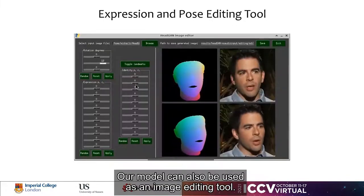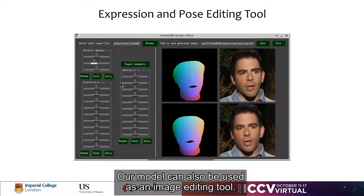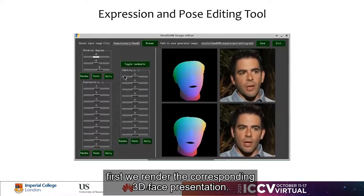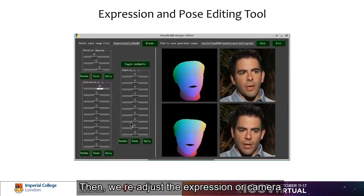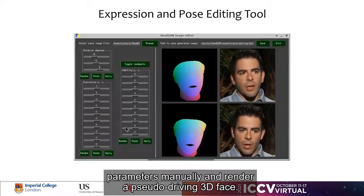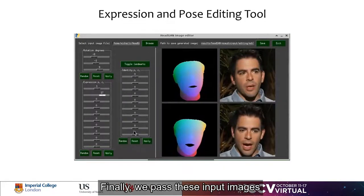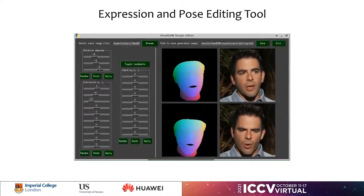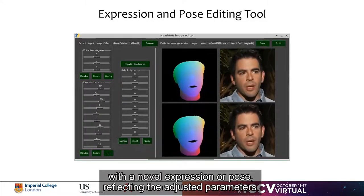Our model can also be used as an image editing tool. Given a source image and its shape and camera parameters, first we render the corresponding 3D face representation. Then, we re-adjust the expression or camera parameters manually and render a pseudo-driving 3D face. Finally, we pass these input images through the generator to obtain a synthetic image with a novel expression or pose, reflecting the adjusted parameters.